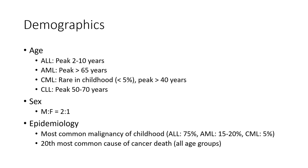Demographic age: ALL peaks at 2 to 10 years; AML peaks at more than 65 years; CML is rare in childhood, less than 5%, peaking at more than 40 years; CLL peaks at 50 to 70 years, predominant in males. Epidemiology: leukemia is the most common malignancy of childhood — 75% ALL, 15–20% AML, 5% CML. It is the 20th most common cause of cancer death.